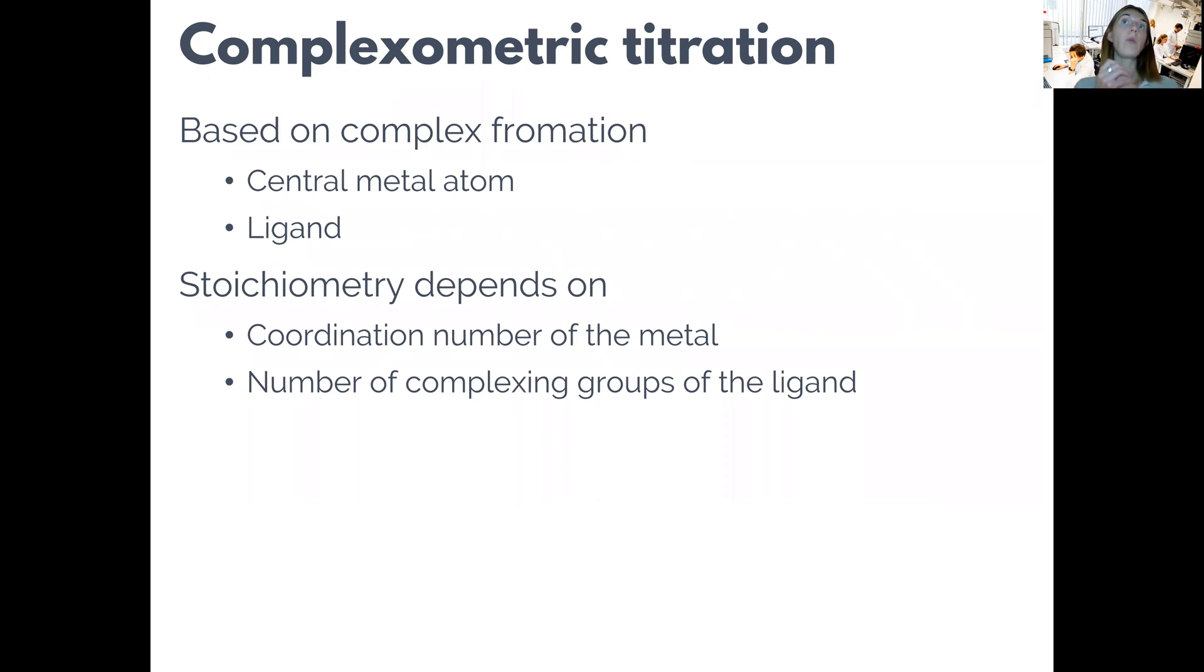With complexometric titration, we are determining these metal atoms and the ligands are our titrants. It's important to note that complexometric titration has usually very clear stoichiometry, but it depends on the coordination number of the metal as well as on the available coordination sites in this ligand.